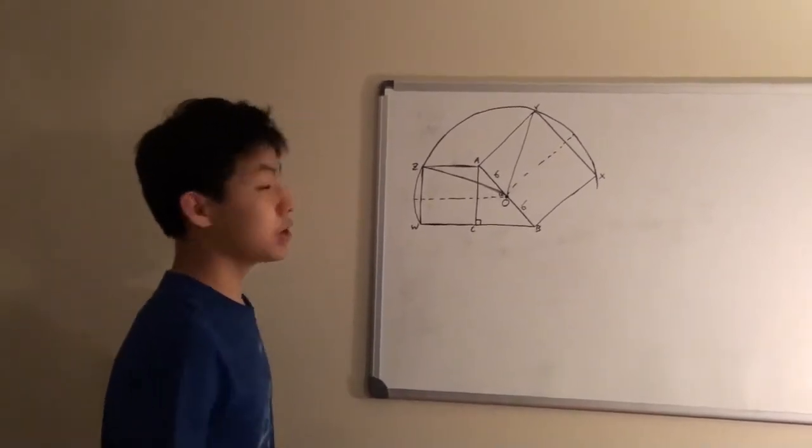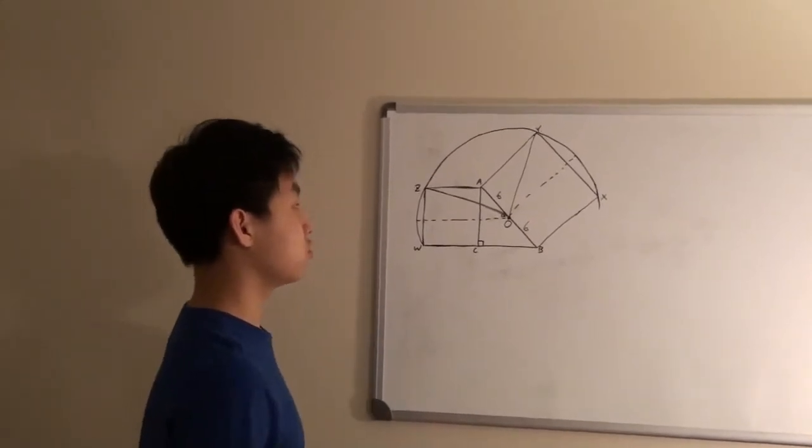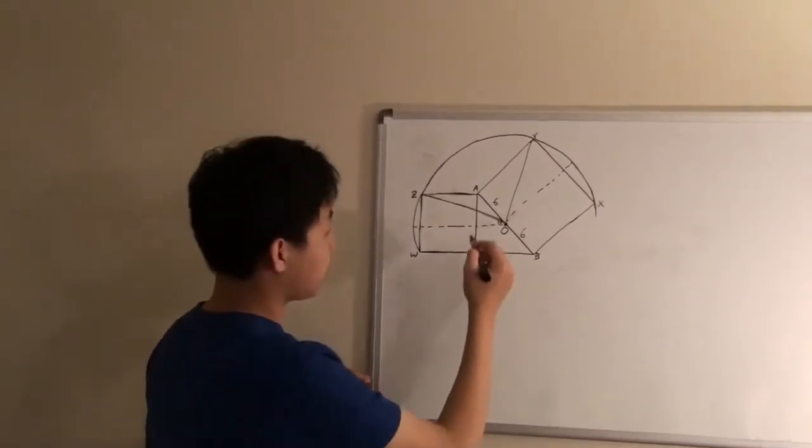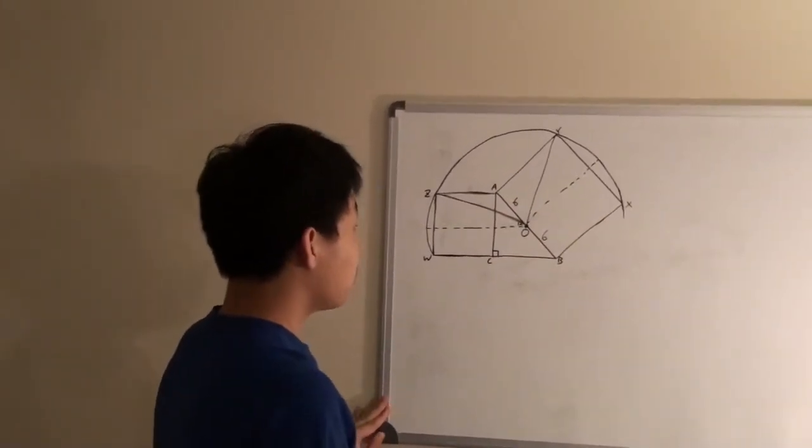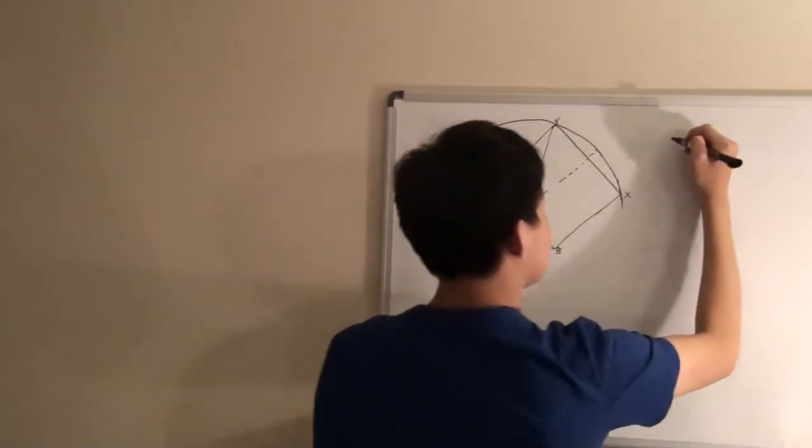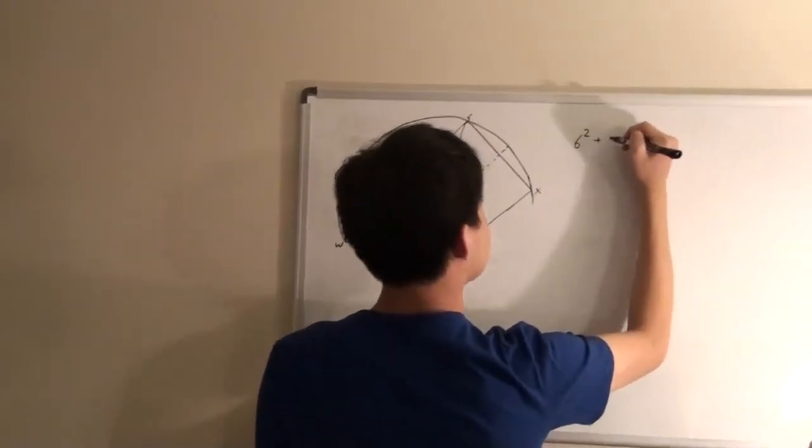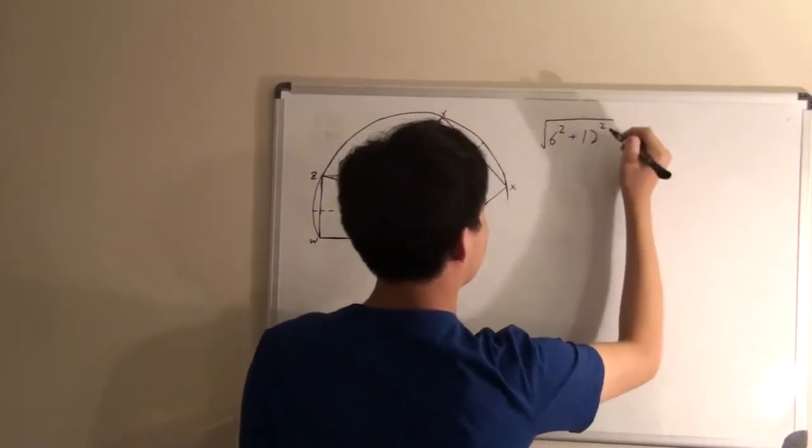And from here, we can use a lot of Pythagorean theory to get us the side lengths AC and BC.